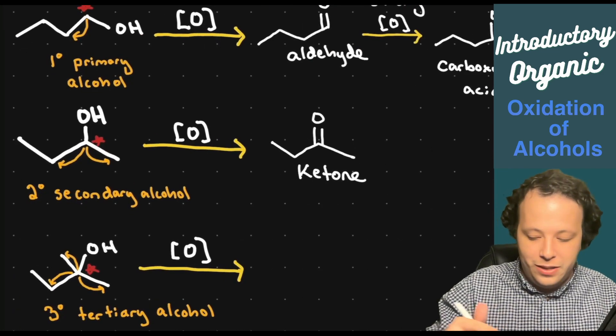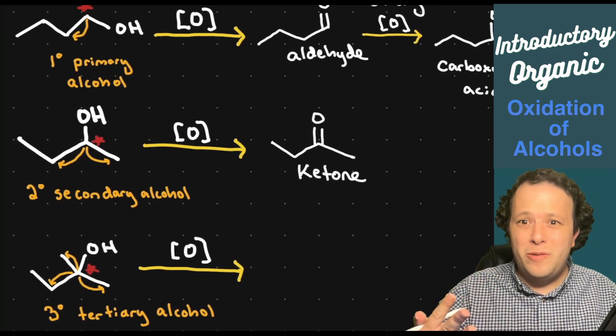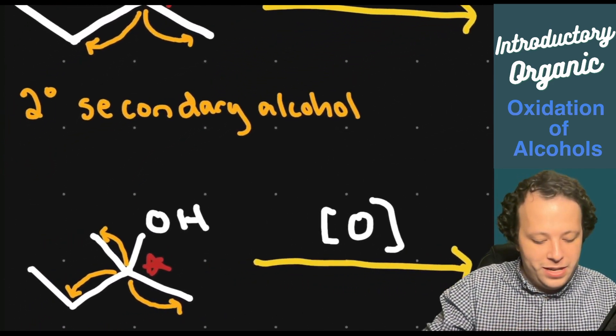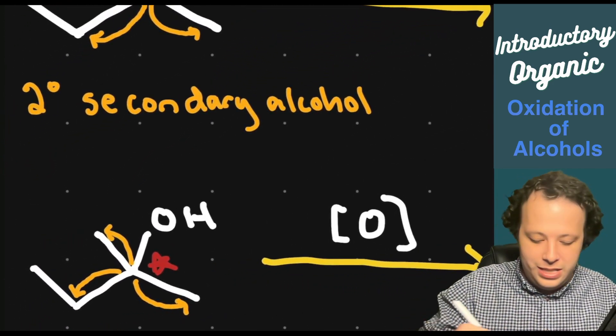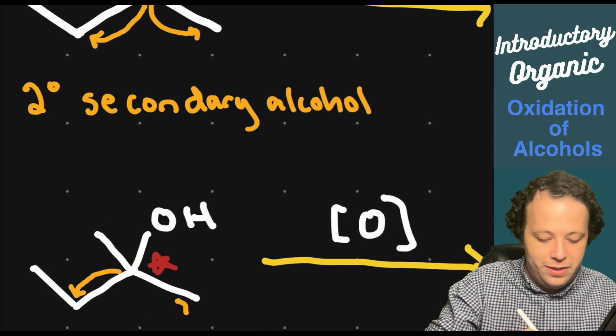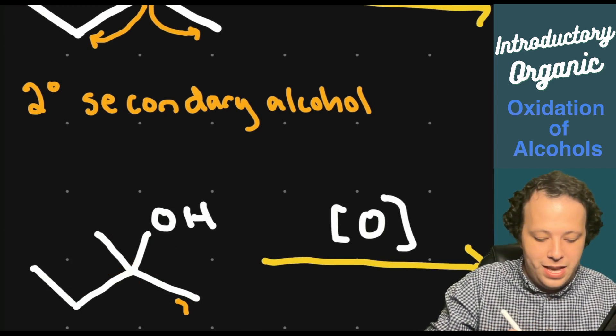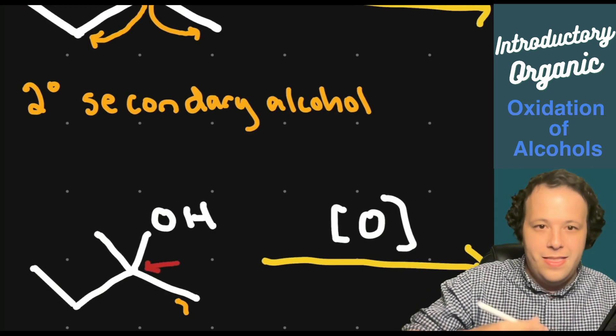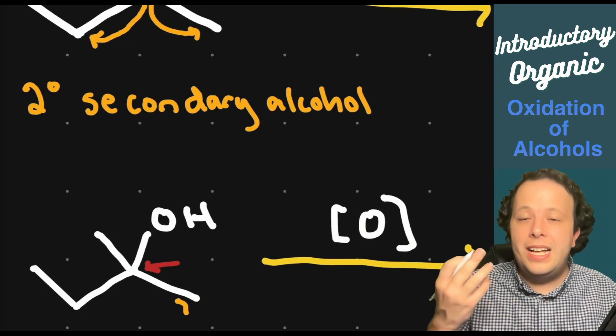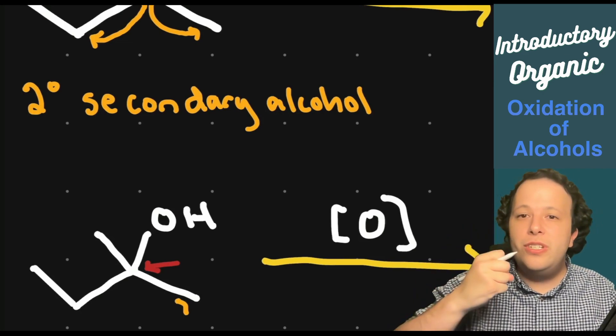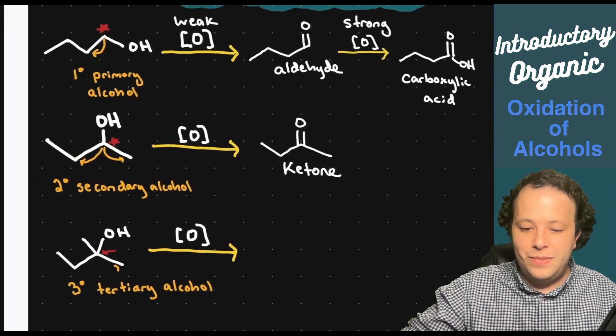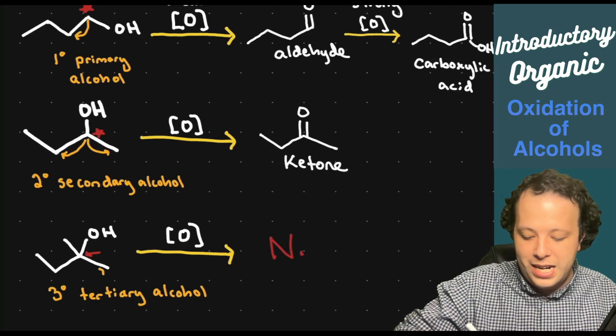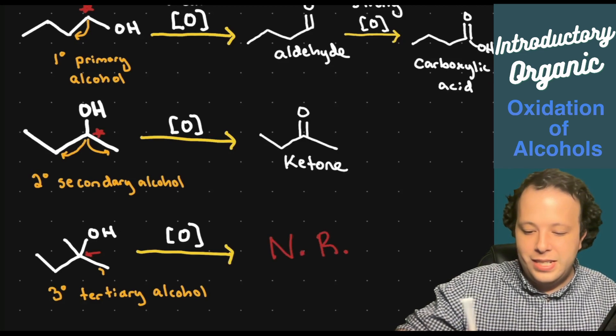With a tertiary compound, it's the same idea. We have to remove a hydrogen from the carbon adjacent to the alcohol. But one thing you might have already noticed is that we already have all four bonds around that carbon which had the star next to it. This particular one has all four bonds. It has zero hydrogen, so there's nothing to pull from in the reaction. So what does that exactly mean? We are going to have no reaction for this step.